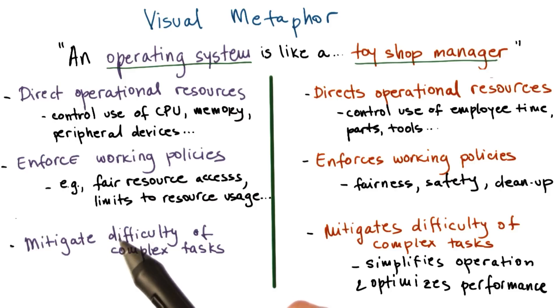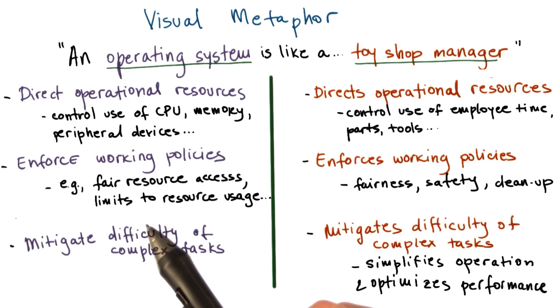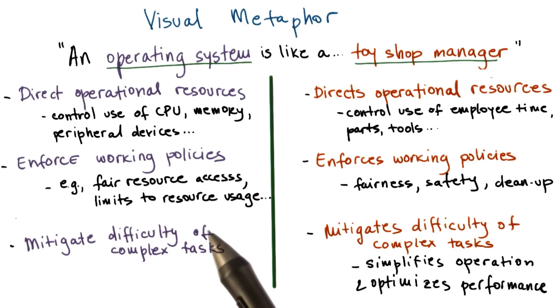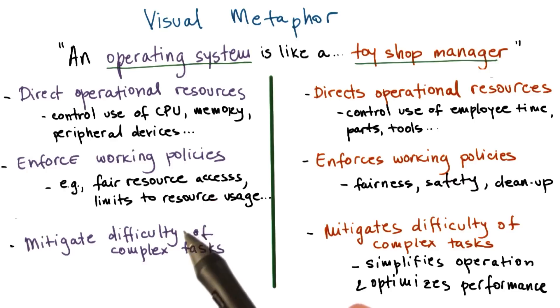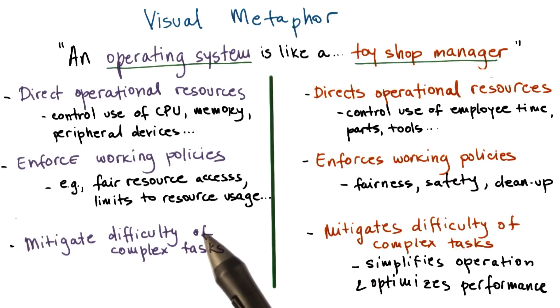Examples of such limits are, for instance, the number of open files that can be opened per process, or some thresholds that need to be passed in order for certain memory management daemons to kick in. There are numerous other examples of limiting resource usage.